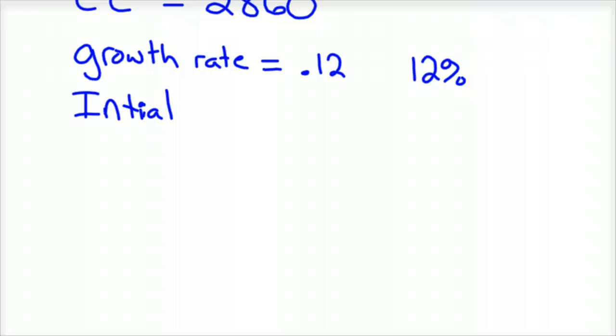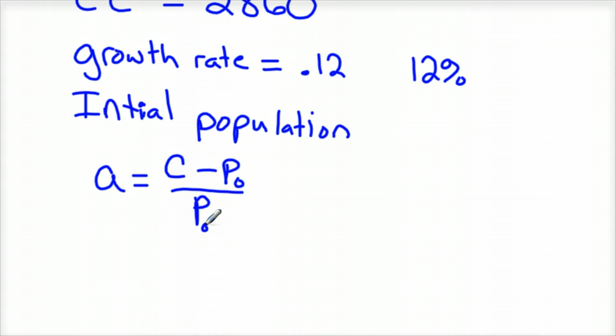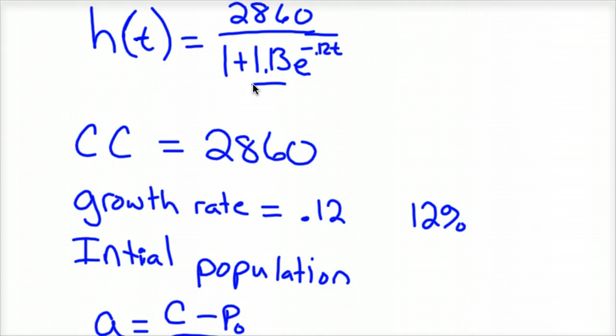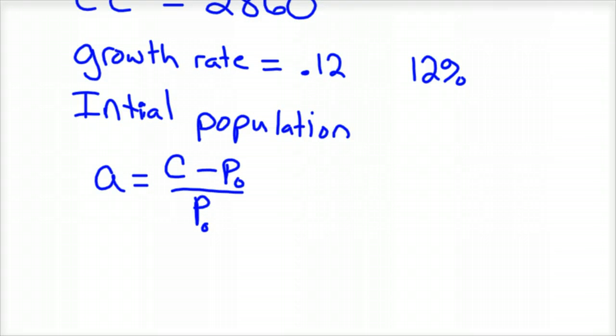So your initial population is found by that equation. A equals C, I called it CC, minus P sub 0 over P sub 0, where P sub 0 is your initial population. And A, in our case, is this 1.13 number. So we know then that I'll put it over here, 1.13 equals C, which in our case I already forgot. Oh there it is, 2,860 minus, we don't know the initial population, over the initial population.